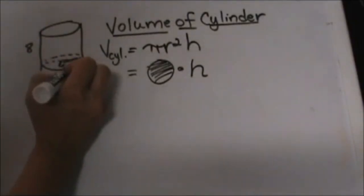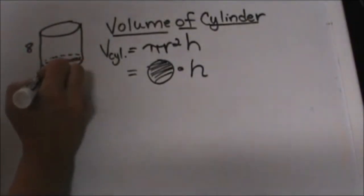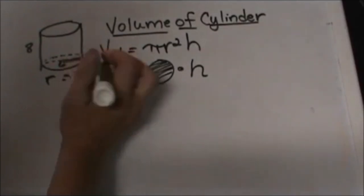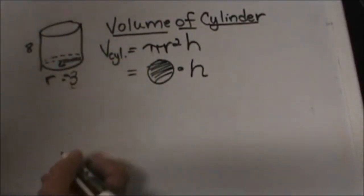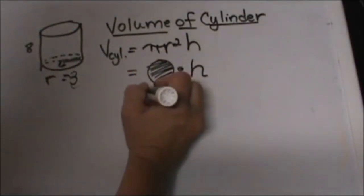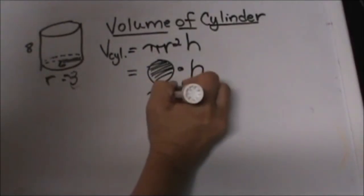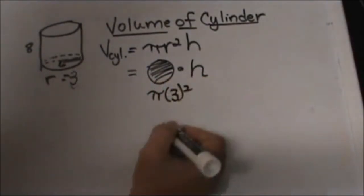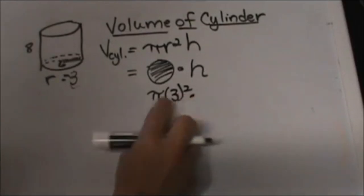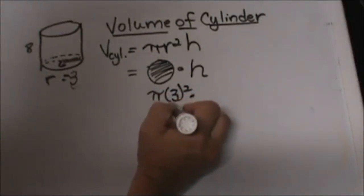So now let's plug in pi times the radius of 3 squared, and then that gives me the area of the base, which is just 9 pi.